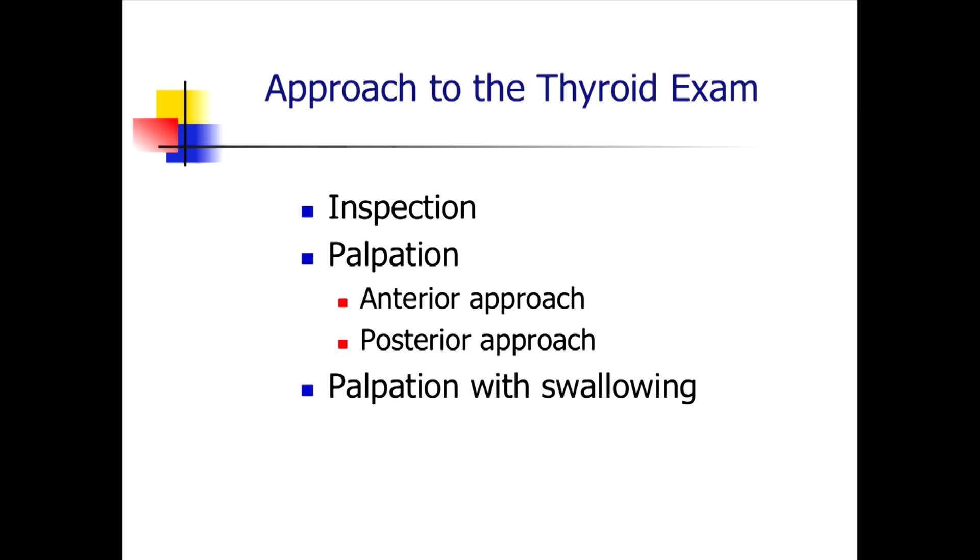Then there's palpation with swallowing, and that's key. When the patient swallows, the thyroid — which is adherent to the swallowing mechanism — will move up and down. That is so key when you think you have an abnormality. If you feel a bump in the neck but it doesn't move with swallowing, then it's much more likely to be a subcutaneous nodule, something in the fat or other tissues not embedded within the thyroid gland. If it's in the thyroid gland, it should move up and down with swallowing — that's a key differentiator for a neck mass.